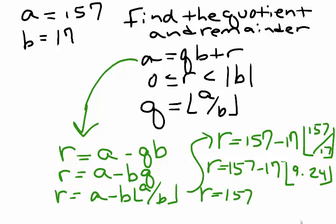So we have R equals 157 minus 17 times 9. This gives us R equals 157 minus 153, which is equal to 4. So our remainder is 4.